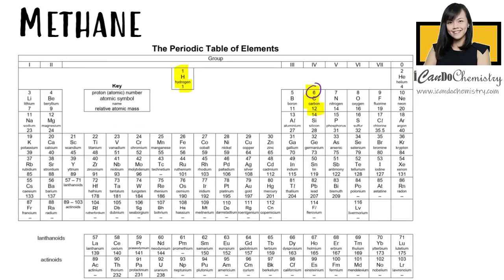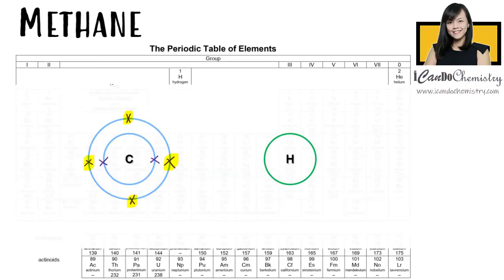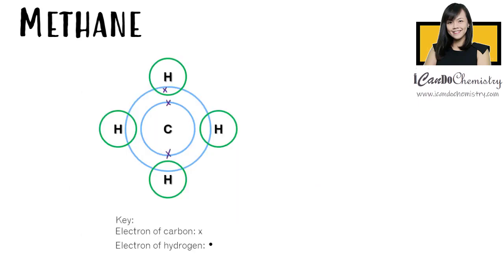This is hydrogen in the periodic table. It has only one electron in its first shell. It needs one more electron to achieve stable noble gas duplet electronic configuration. Hence, one carbon atom will bond with four hydrogens and all the atoms have achieved stable noble gas electronic configuration.